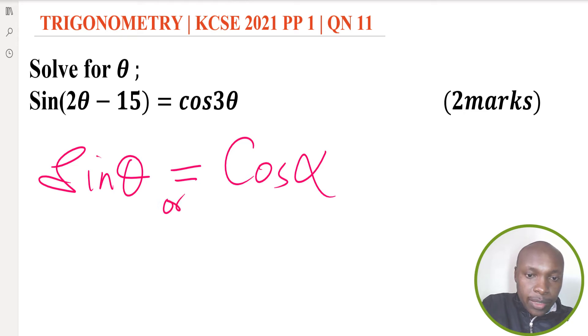Or it can also be the other way around: it can be cosine of angle θ equated to sine of an angle like α.